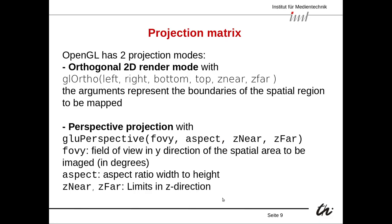OpenGL has two projection modes. What we just saw corresponds to perspective projection, but there's also an orthogonal projection — GL ortho — which is a parallel projection, corresponding to a zoom lens with infinite focal length. Basically it makes a parallel projection of light rays onto the screen, so objects stay at the same size regardless of how far away they are. This is actually the simpler one, so I'll show it first.